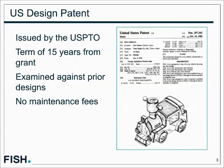In the US, design patents have numbers beginning with the letter D, or in the case of older ones, DES. These are issued by the patent office after examination to determine whether the design is novel and non-obvious. Once granted, they have a 15-year term — used to be 14 years — and they have a presumption of validity with no maintenance fees required.